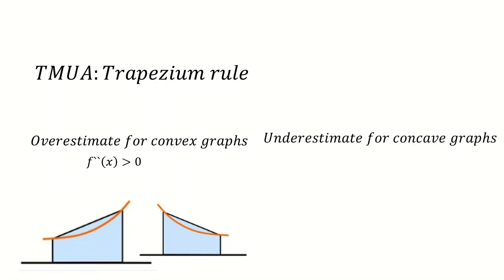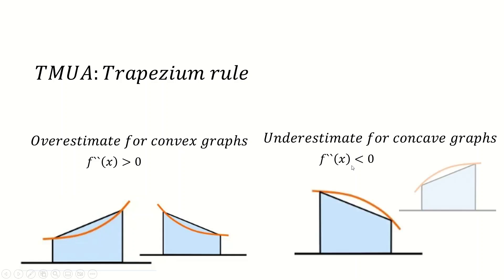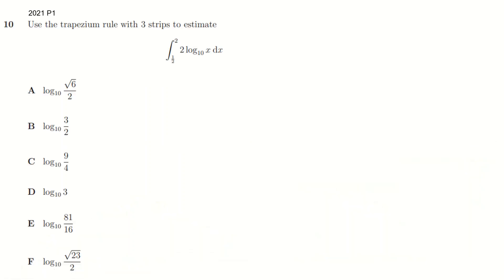Concave gives you underestimates — exactly the opposite condition on the second derivative. The first derivative doesn't matter; you can have either negative or positive gradient and still have underestimates. Those are the conditions we need to know, but we'll also talk about the conditions in which that would change from one to the other. The first question we'll do is from last year — it's just a straightforward trapezium rule question, not talking about estimates at all, just asking you to do the calculation.